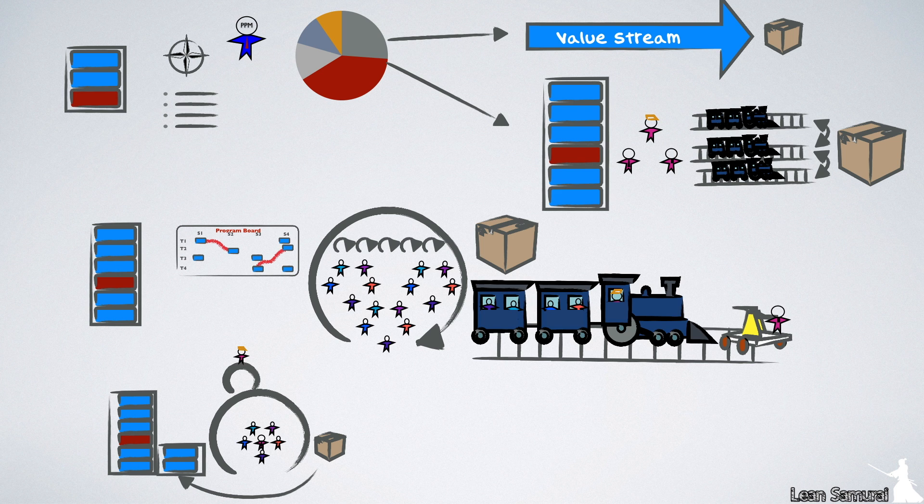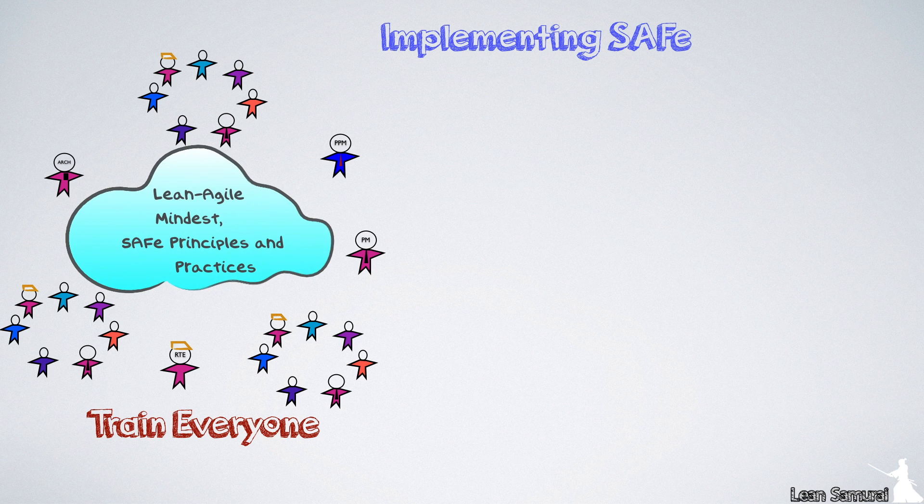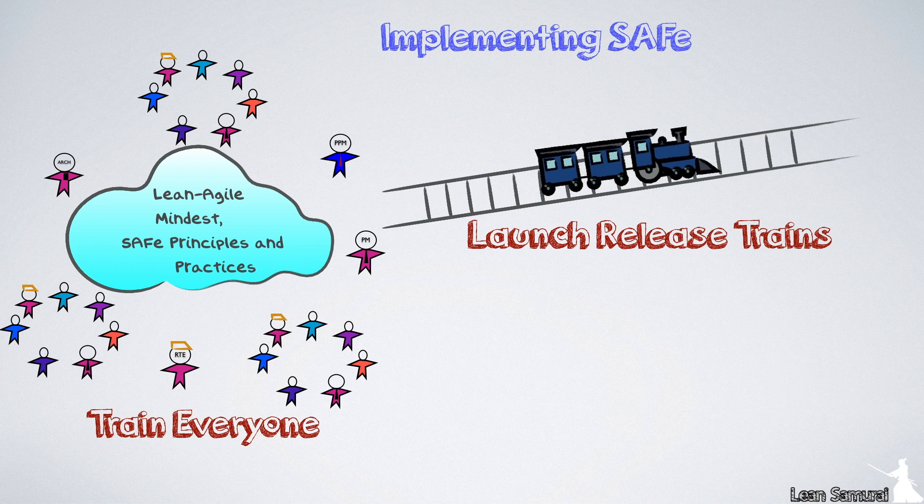This was a quick tour of what SAFE is and how it works. In order to succeed, it is important to train leaders and teams in the new Lean Agile mindsets and SAFE principles and practices of the new way of working and launch release trains.